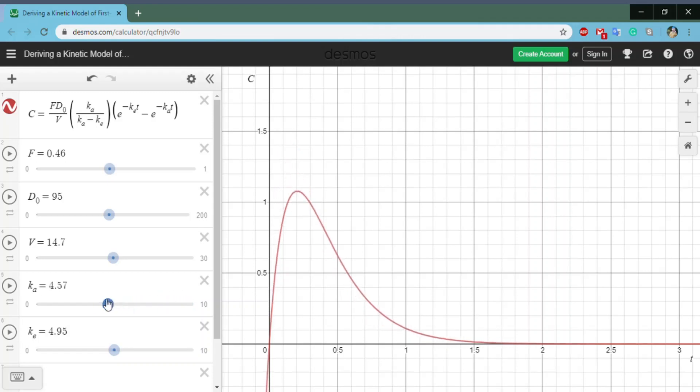Similarly, if you decrease KA, you're going to spread out the curve some more. You're going to spread it out like that, because you're going to decrease that initial absorbing rate constant.